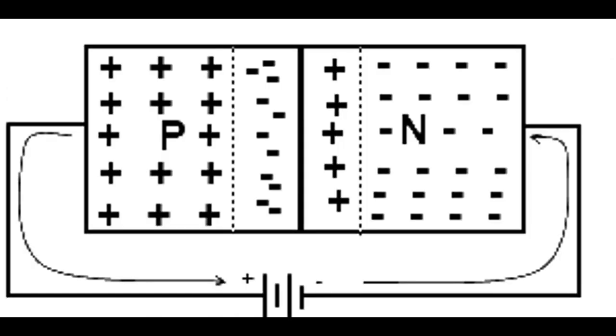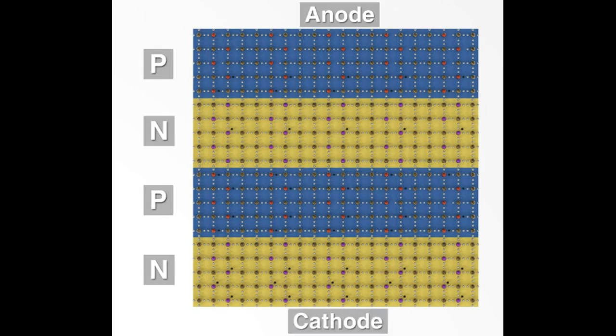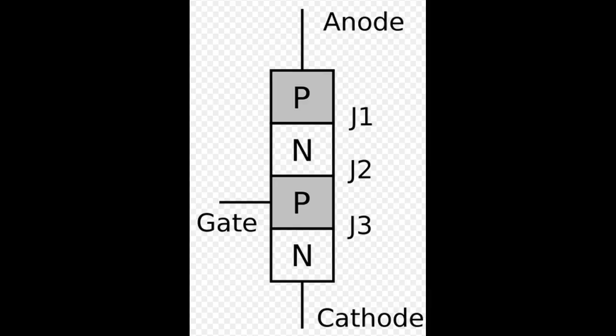The Thyristor is different from the diode and has four layers of alternating semiconductor wafer in the P-N-P-N configuration which form three depletion regions.